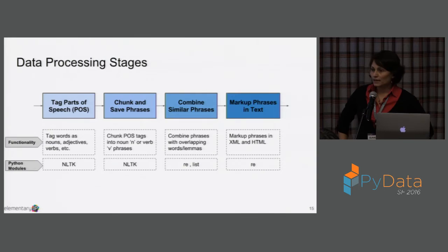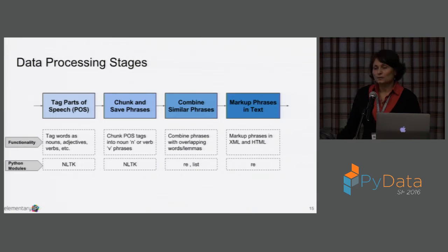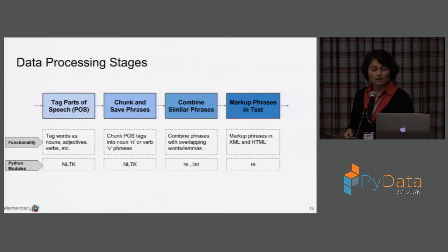The data processing is a four-stage process: part-of-speech tagging, then we chunk and save phrases — this is rule-based, trying to get the right nouns and not junk adjectives or verbs. We chunk the parts-of-speech tags into noun or verb phrase groups. In patents, because they're written in a very strange language — at least the claims — the lawyers are sometimes deliberately trying to hide the actual invention, so it takes some work to sift out the legalese. Then we combine similar phrases to clean them up, and finally mark them up in the original text for display as well as for use in XML and other purposes.